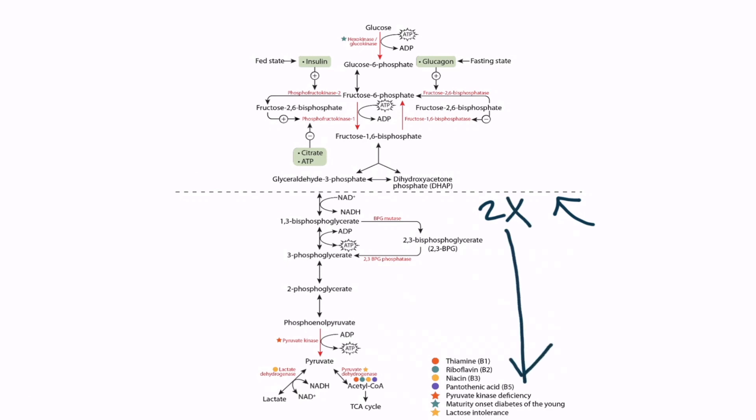Notice that the six-carbon molecule fructose 1,6-bisphosphate is broken into two separate three-carbon molecules: glyceraldehyde-3-phosphate and dihydroxyacetone phosphate, or DHAP. Both of these are three-carbon molecules. The DHAP gets converted into glyceraldehyde-3-phosphate, so we end up with two molecules of glyceraldehyde-3-phosphate that go through the rest of the pathway.